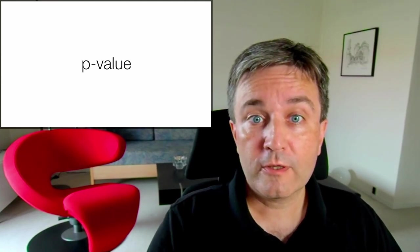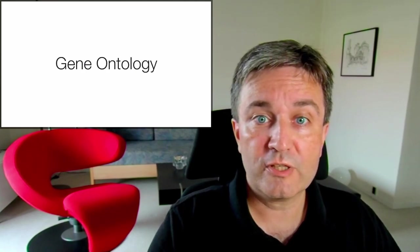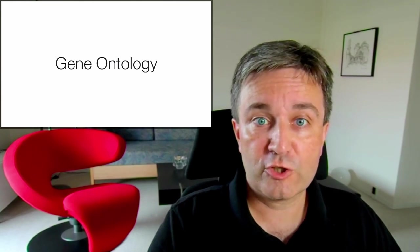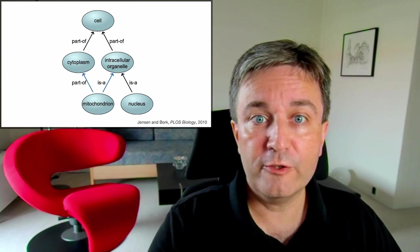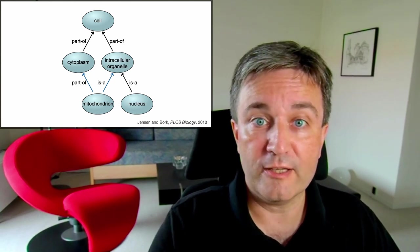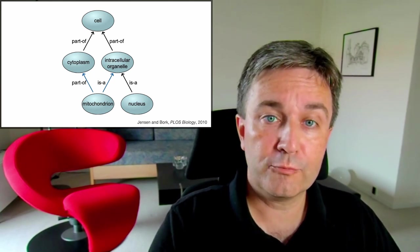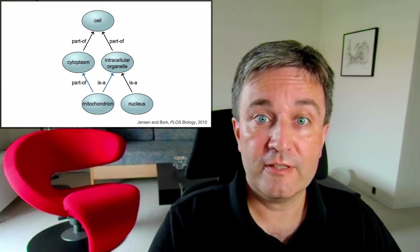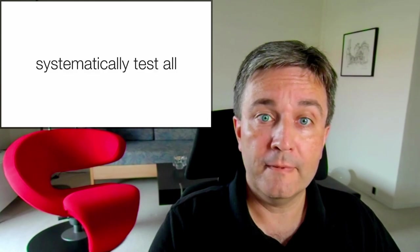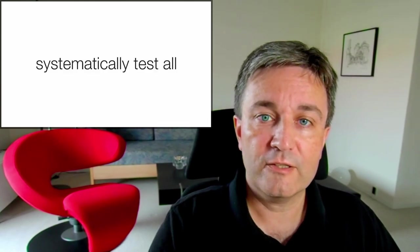Of course, mitochondrial is just one of many terms in gene ontology. Gene ontology is a directed acyclic graph of terms that are commonly used to describe the functions, localizations and processes that proteins are involved in. The idea of enrichment analysis is that you don't just test one of them, but instead you systematically test them all.